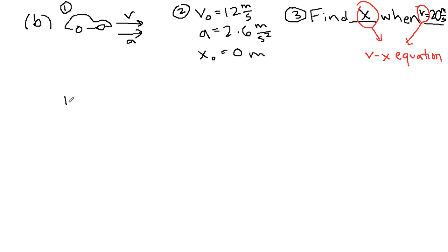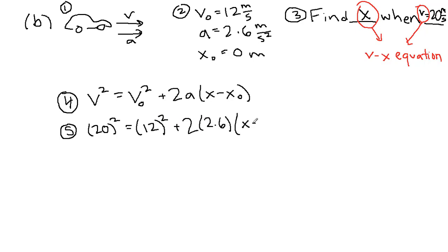Step four, like we did before, is writing down the equation without plugging in numbers. This gives our work context when we're reviewing it in the future. Then step five is the math part. v squared equals v initial squared plus 2a times x minus x initial. So v, we're told, is 20. The initial velocity was 12 meters per second plus 2 times 2.6 times the x that we're looking for minus zero.